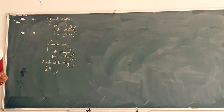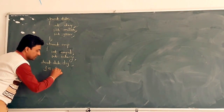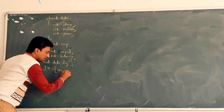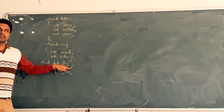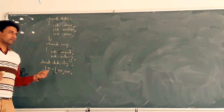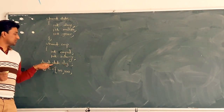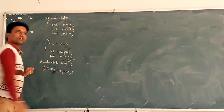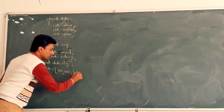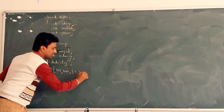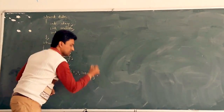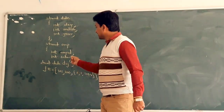We can also initialize it statically. For example, E is equal to: the first data member is employee ID, suppose 101. For the date of joining, since it is a structure type variable, we write another curly bracket — suppose he joins on 1st January 2014, so we write 1, 1, 2014 in curly brackets. This is how we can initialize nested structures.